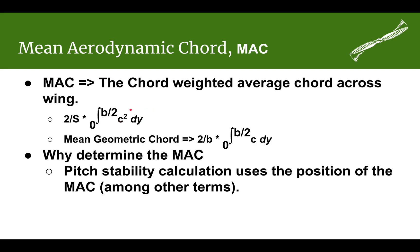So the mean aerodynamic chord is going to be positioned closer to the root than the geometric chord would be. Why do we want to know the MAC? We need it mostly for pitch calculations — pitch stability calculations. You can think of it as an equivalence: a straight rectangular wing with the calculated mean aerodynamic chord will have the same pitch characteristics as your actual wing, whether it's tapered, swept, or has multiple tapers.